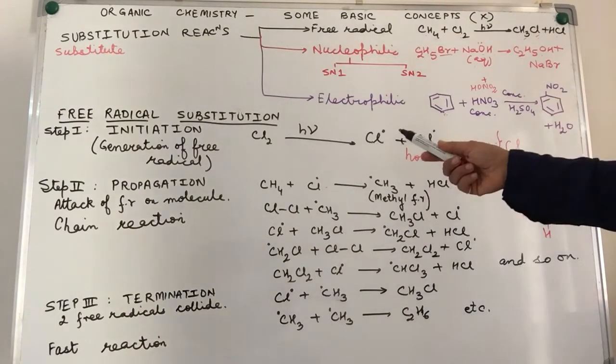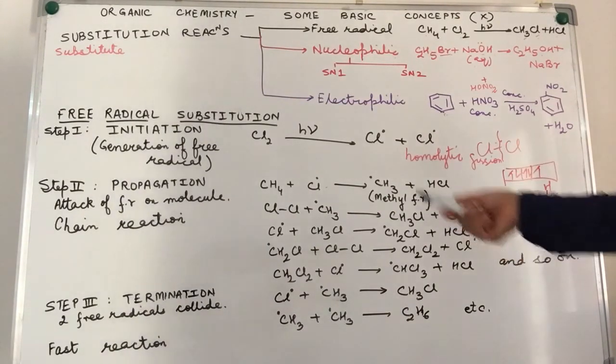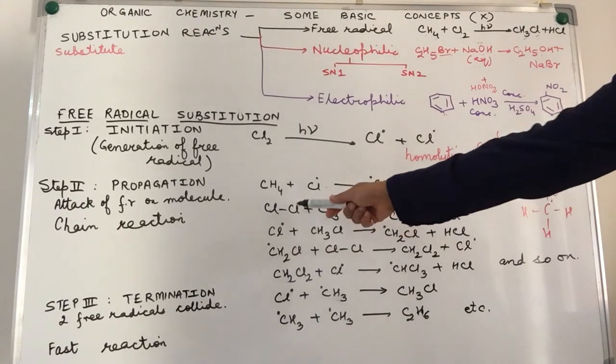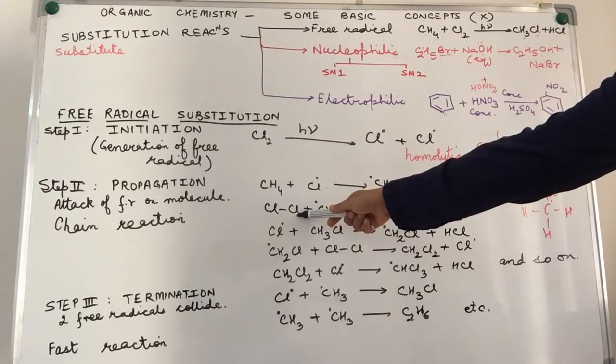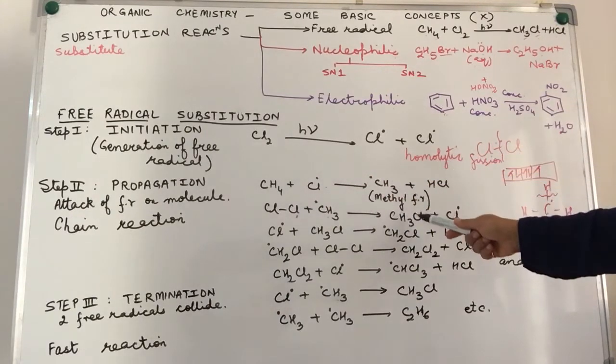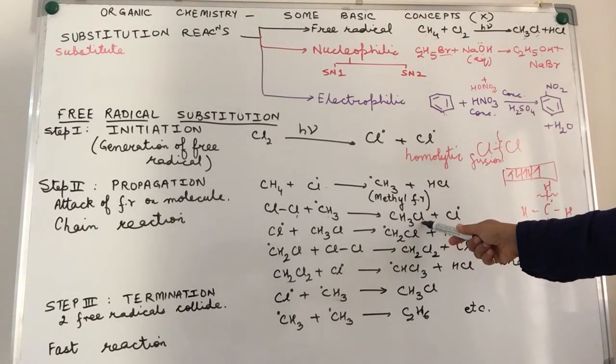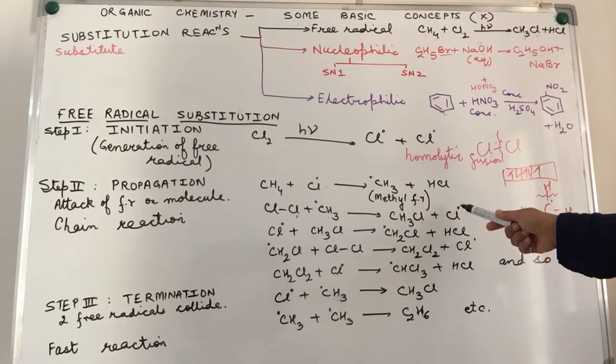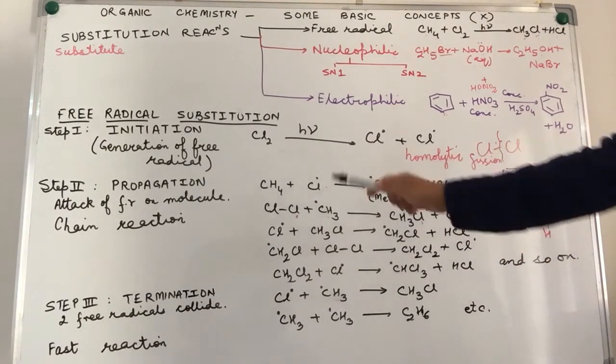So, what it does is, there are many possibilities. One of the possibilities that we have taken over here is methyl free radical goes and attacks another chlorine molecule. They form a product, chloromethane and chloride free radical. So, chloride free radical is what we started off with.